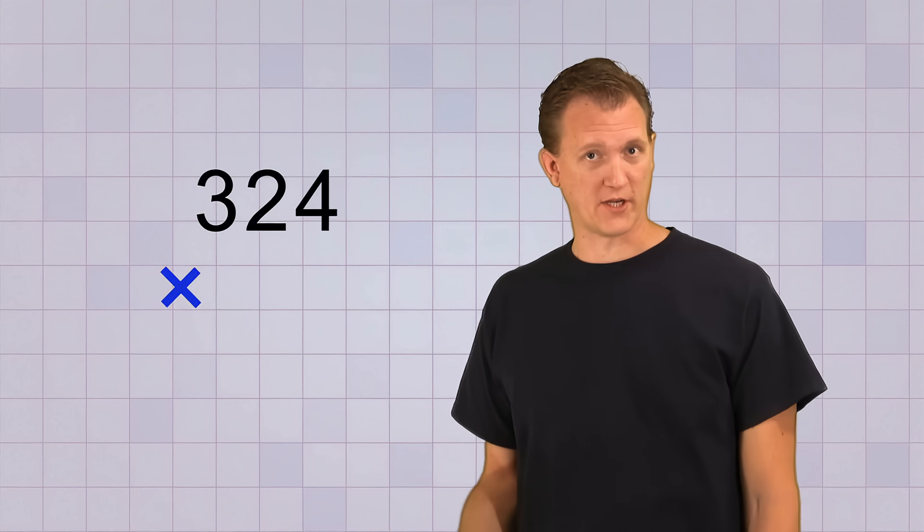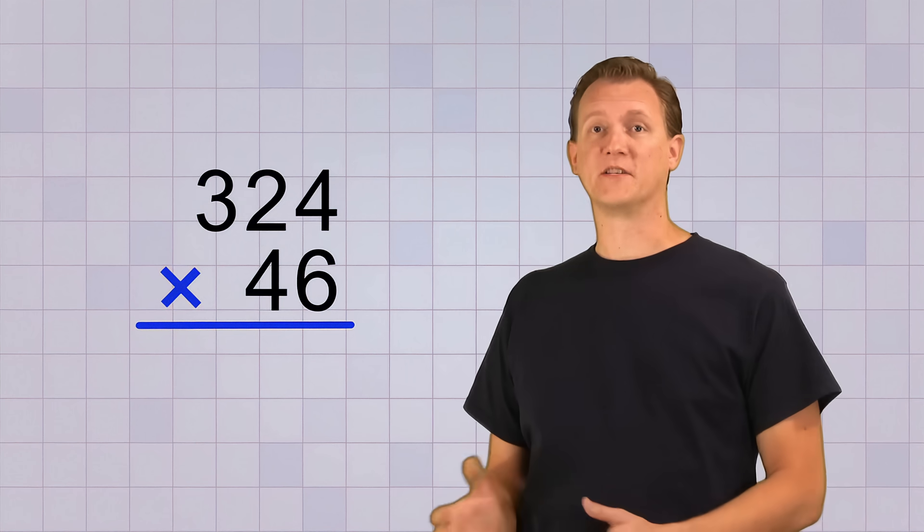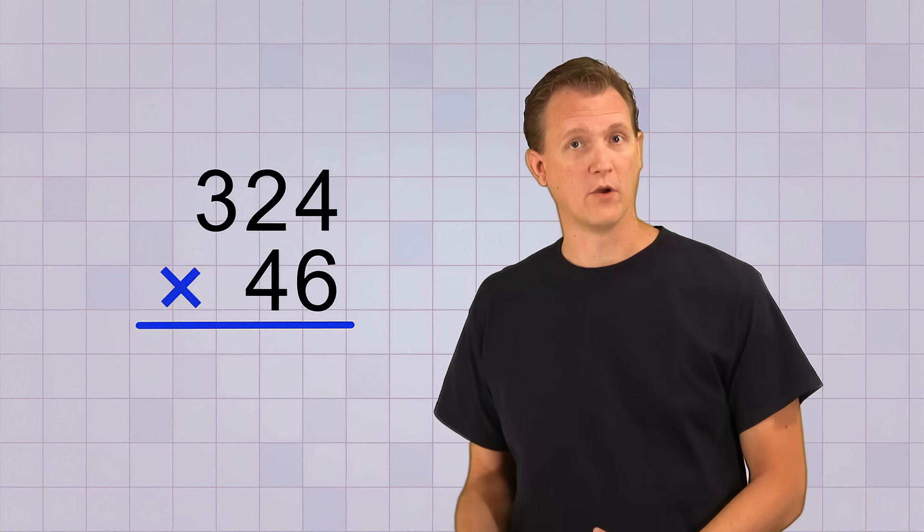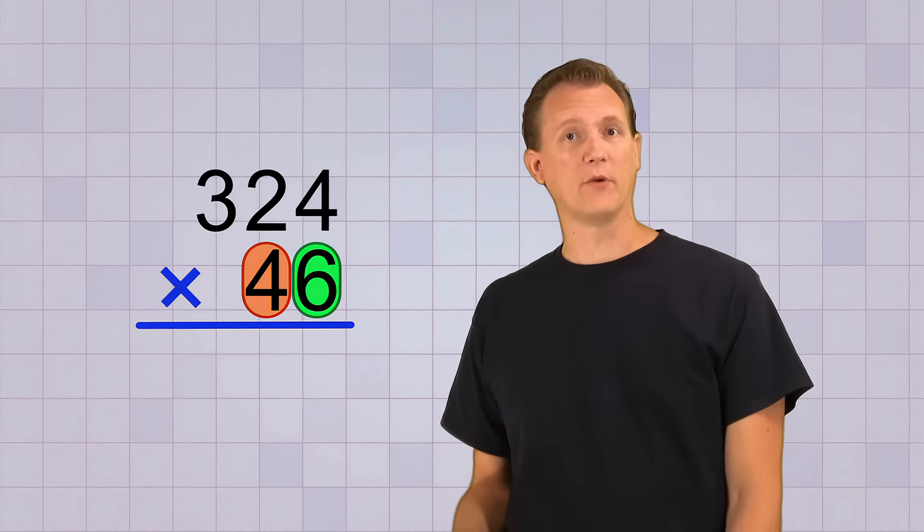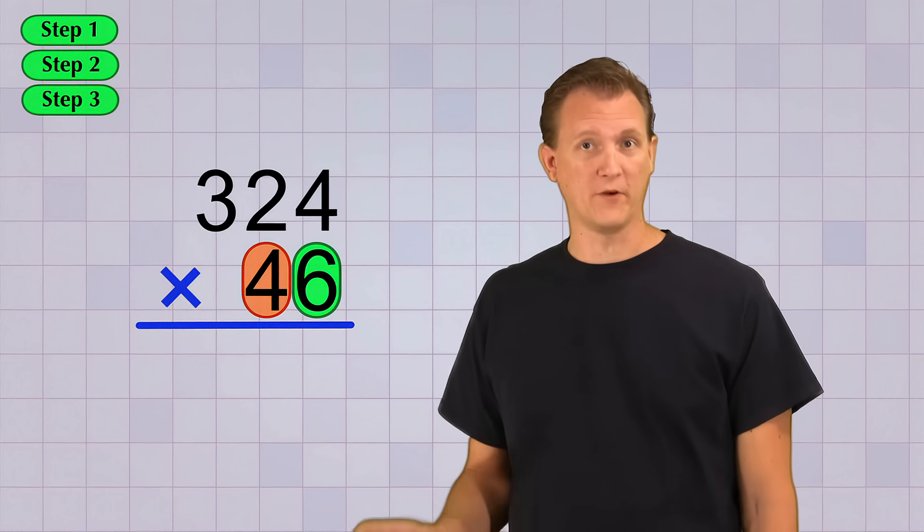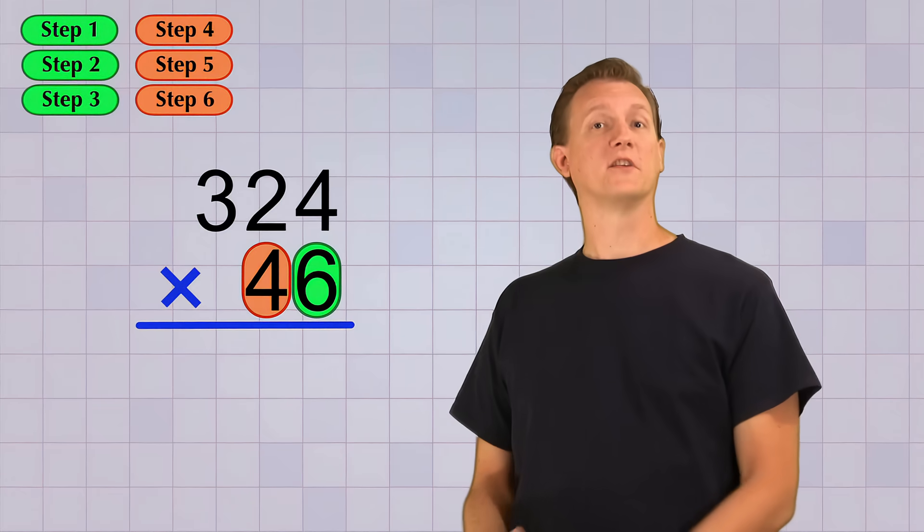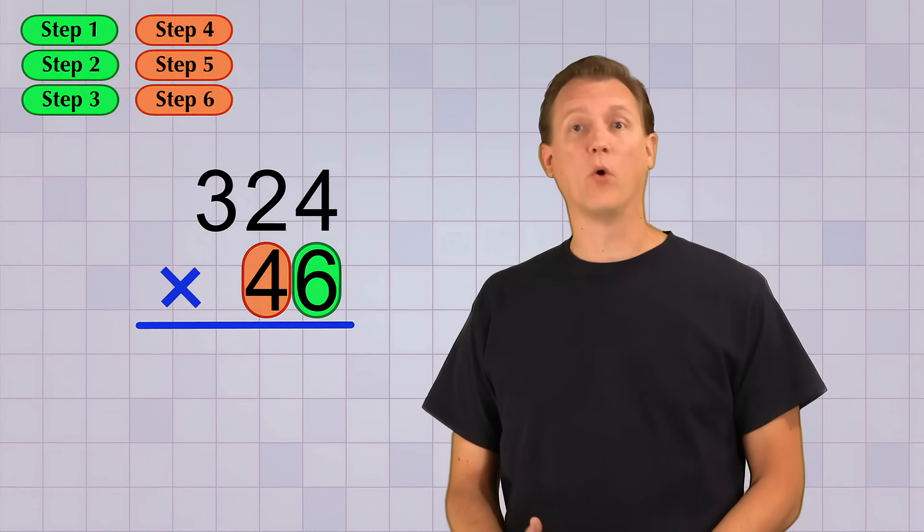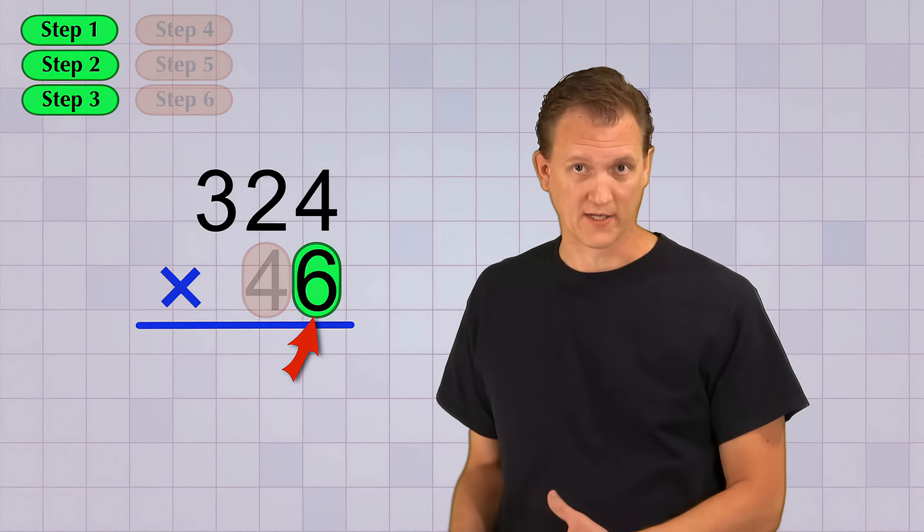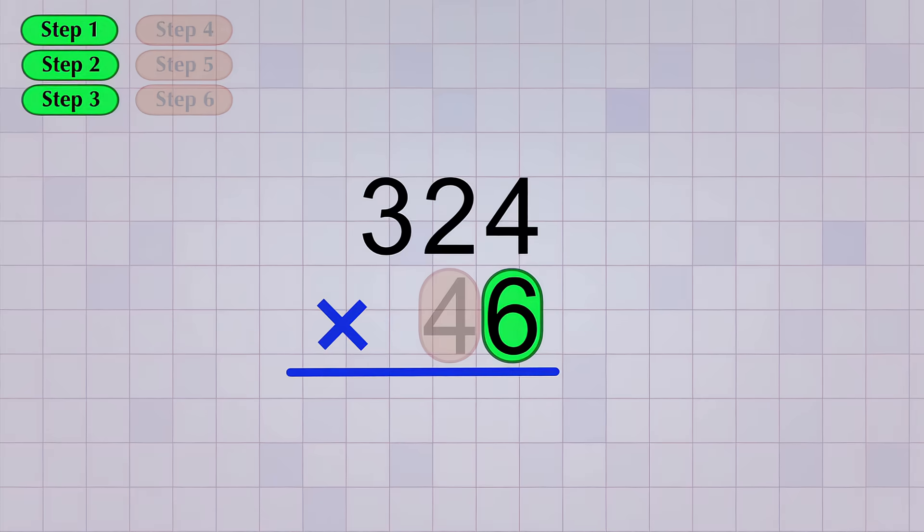So let's multiply 324 by 46. Now remember, we're going to do the same procedure that we did in the last video for each of the bottom digits. And since our top number has three digits, that means there'll be three multiplication steps for the first digit and three steps for the second digit. Fortunately, we can start the same way we would if the bottom number only had one digit, by just ignoring the second digit until we finish the first three steps. Alright, so our first multiplication step is 6 times 4, which is 24.